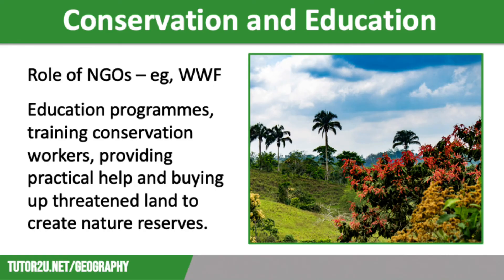Their aim is to protect ecosystems that are seriously threatened. These charity groups promote their conservation aims in a number of ways. They write education programmes which include schemes of work, resource packs, and classroom videos to be used in schools and colleges throughout the world. They train up conservation workers to ensure that they can protect vulnerable areas as effectively as possible. They also provide practical help to set up conservation programmes, and sometimes they buy threatened areas of land to turn into nature reserves to ensure long-term protection. NGOs believe it is essential that those involved in rainforest exploitation and management are fully aware of the negative consequences of their actions.